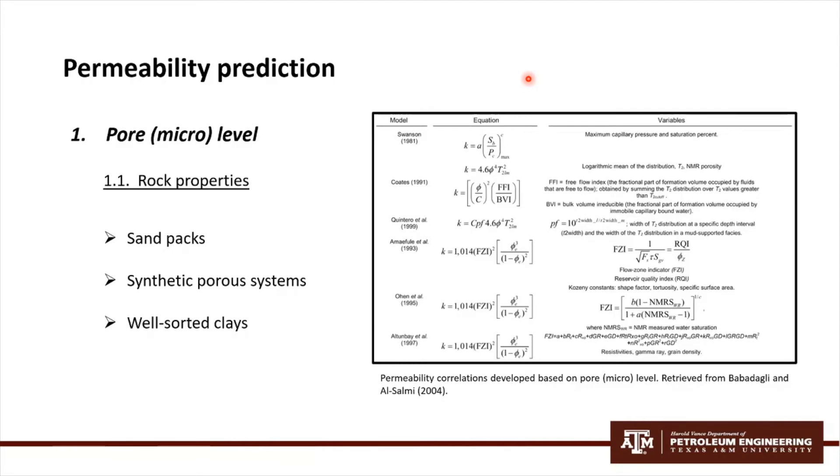Most of these correlations were derived for sand packs, synthetic porous systems, and well-sorted clays. Specifically for well-sorted carbonate rocks, these relationships are applicable, but the heterogeneous carbonates use techniques such as MRI and artificial neural network, since they are more convenient for this type of carbonates.